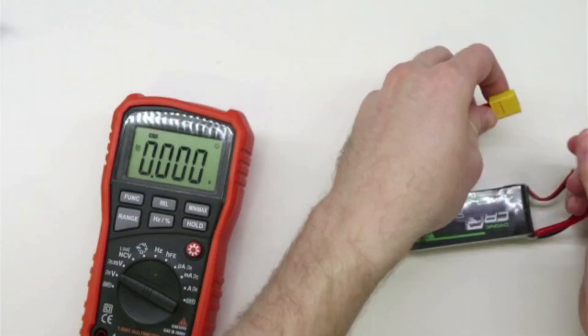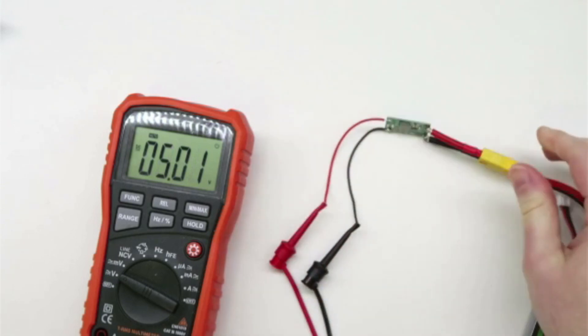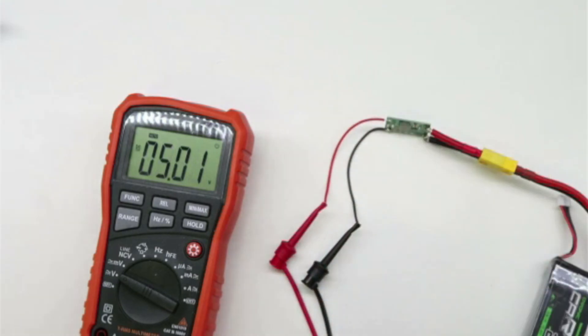Alright, let's test the buck converter before we continue. And it's running at 5 volts. Perfect.